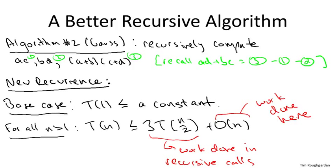Secondly, I'm ignoring exactly what the constant factor is in the linear work done outside of the recursive calls. Indeed, it's a little bit bigger in Gauss's algorithm than it is in the naive algorithm with four recursive calls, but it's only by a constant factor, and that's going to be suppressed in the big O notation.